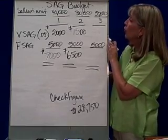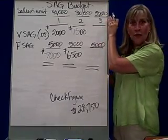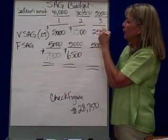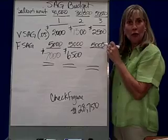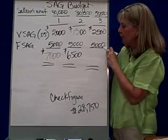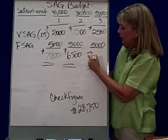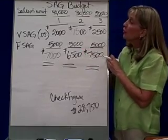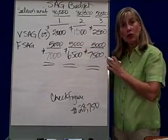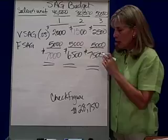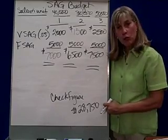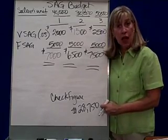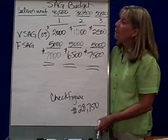In the third quarter, five cents times 50,000 units sold would be $2,500. $2,500 plus fixed cost of $5,000 — budget $7,500. Now, if you were to do the selling, administrative, and general budget for the whole year, your check figure would be $28,750 for this budget.